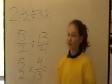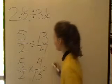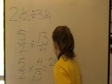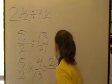Now we have to times the two numerators together and the two denominators. So, 5 times 4 equals 20. And 2 times 13 is 26.